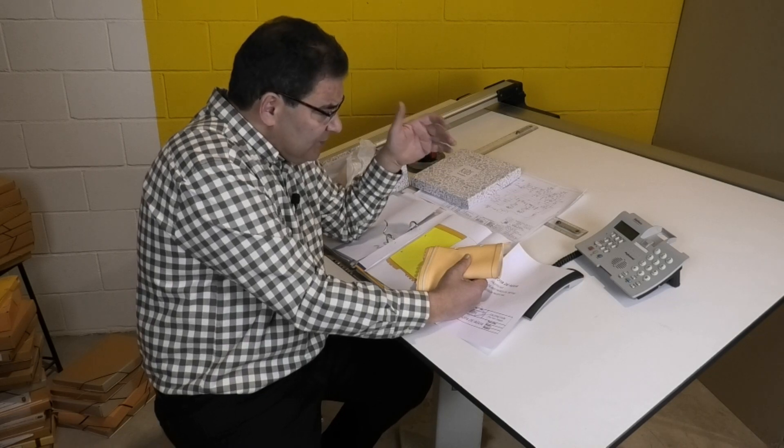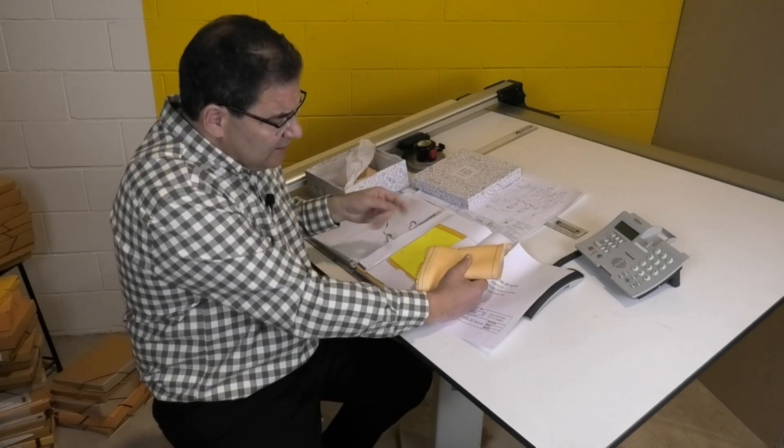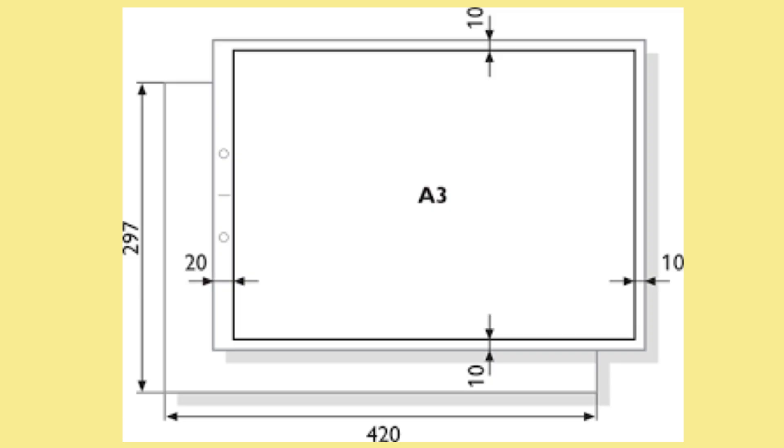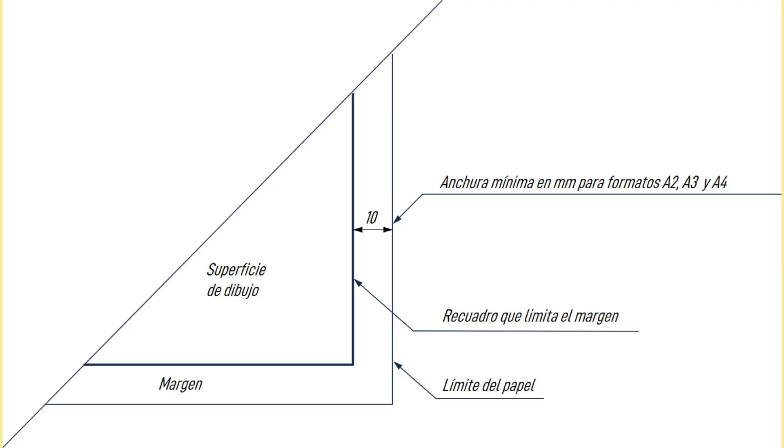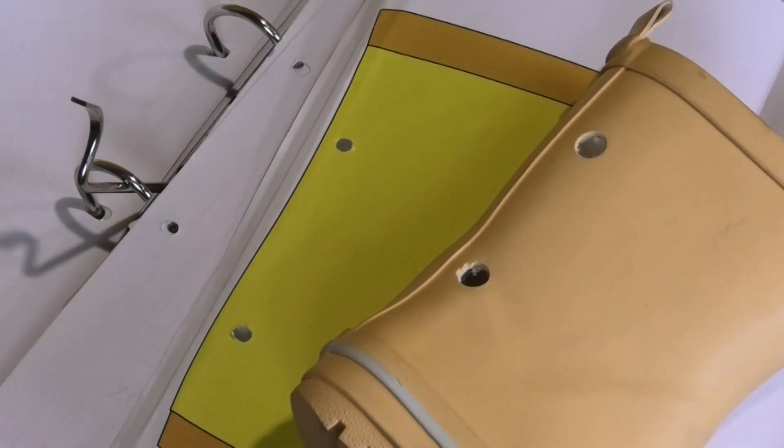Al final vamos a tener que poner también unos márgenes en los planos para poder delimitar cuál es la zona de trabajo y cuáles son zonas para encuadernaciones. De hecho, en el A4 y en el A3 debe ser de un centímetro, en formatos mayores de dos centímetros. Pero si yo lo encuaderno en un lado, tengo que dejar dos centímetros a ese lado. Un A3 para encuadernar tendrá dos centímetros en ese lado. Esto, creedme, también es importante.